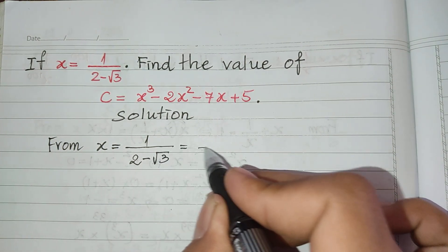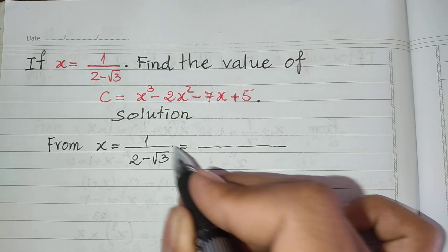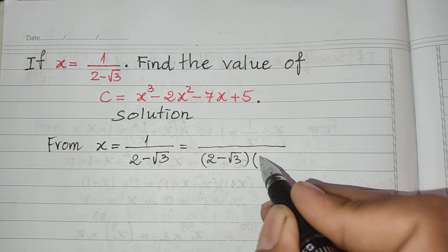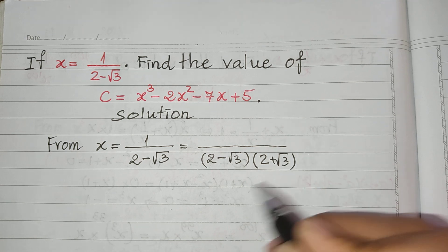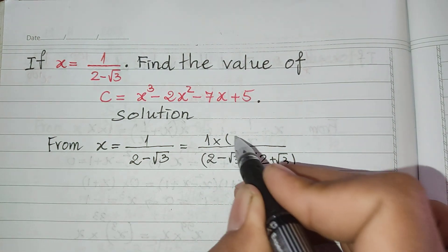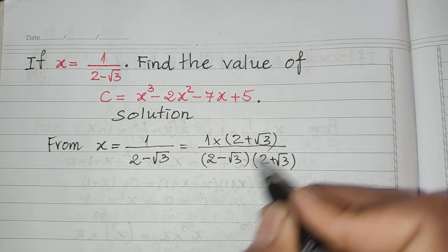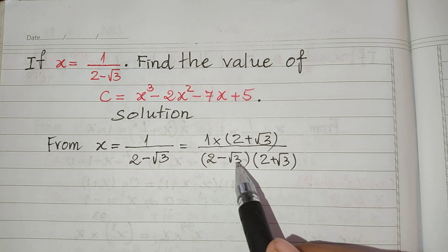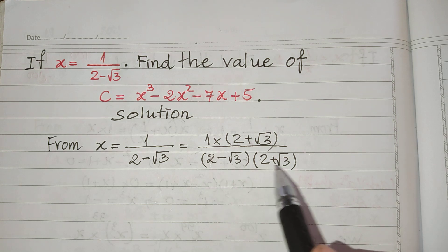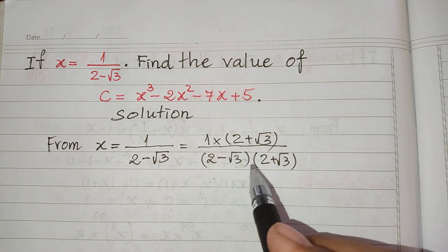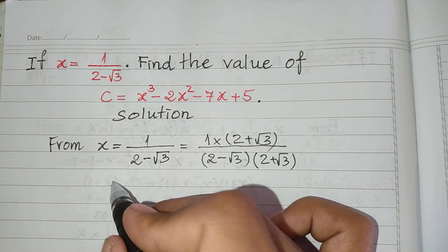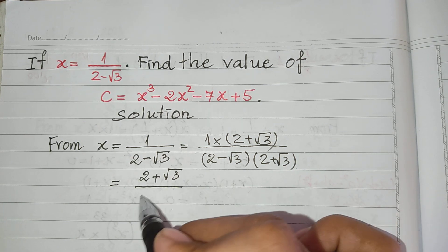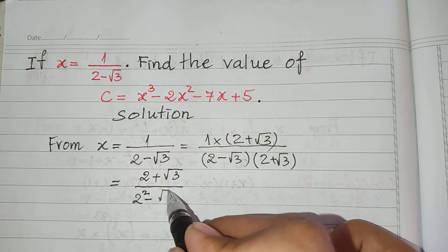I can multiply the numerator and the denominator with 2 plus square root 3. So I multiply with 2 plus square root 3, and this also multiplied by 2 plus square root 3. We use the formula that a minus b multiplied by a plus b equals a squared minus b squared. So it equals 2 plus square root 3, divided by 2 squared minus square root 3 squared.